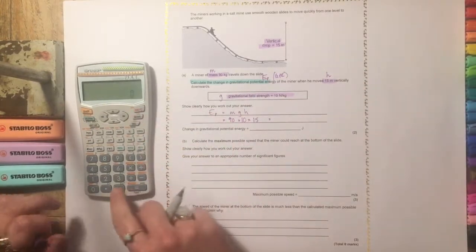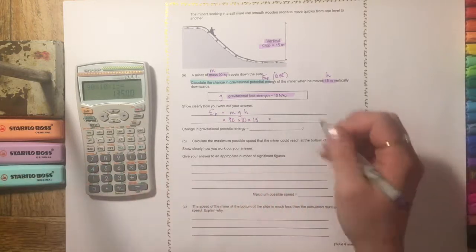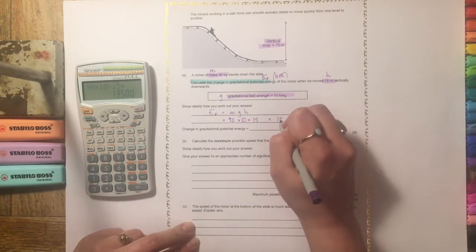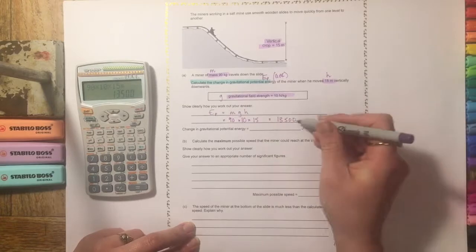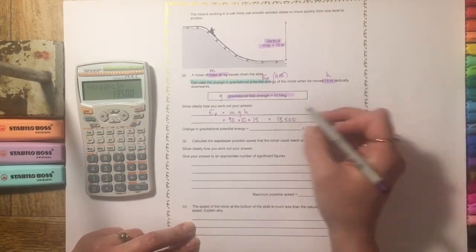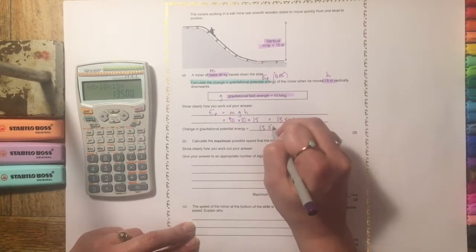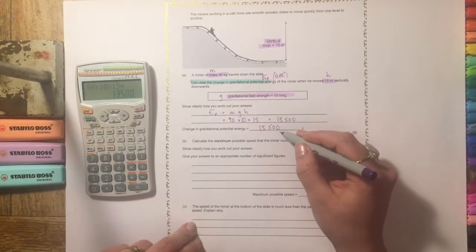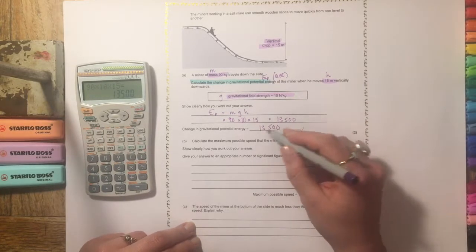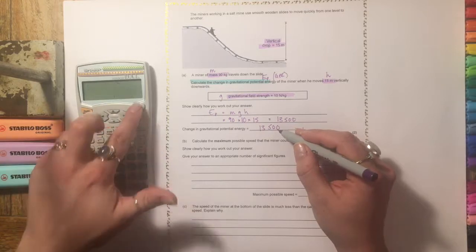And then we're just going to put that into a calculator and it gives us 13,500 joules. So you can either leave that there and you'll still gain marks for it. But it's always useful just to make it really clear to your examiner that you know exactly what the answer is by putting it into the relevant section.